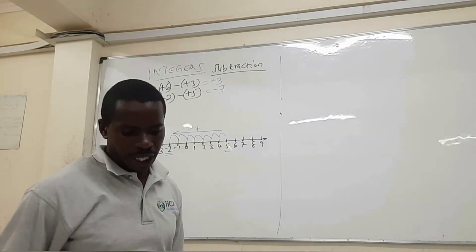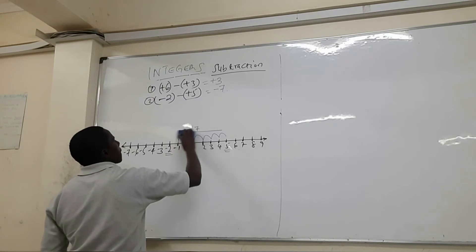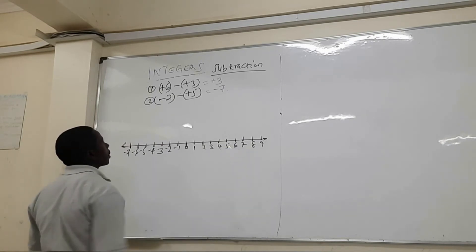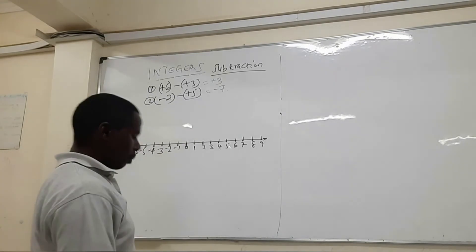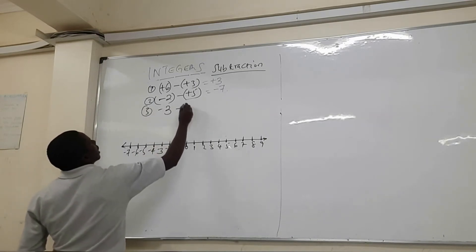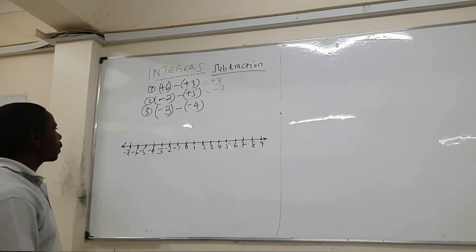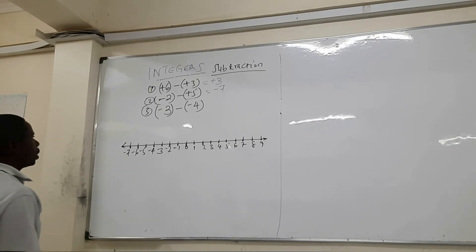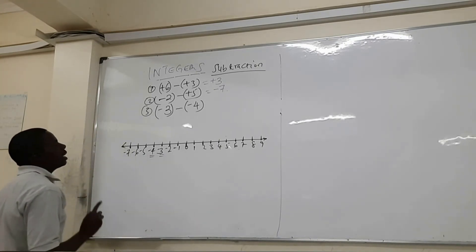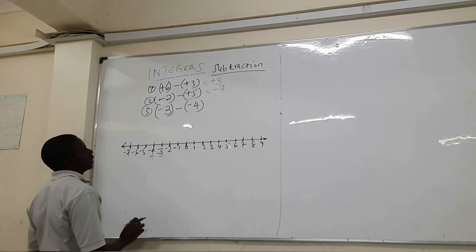That's how we perform that operation using a number line. Next, we want to solve minus three minus minus four using a number line. The first step is to locate the two numbers on the number line — minus three and minus four. We start from the second number, which is minus four.